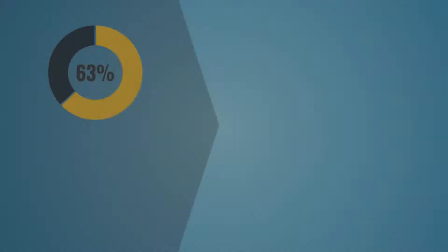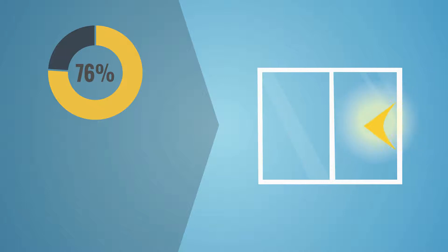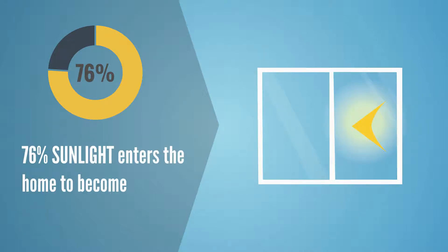According to Energy.gov, 76% of the sunlight that falls on standard double-pane windows enters the home to become heat. Second,